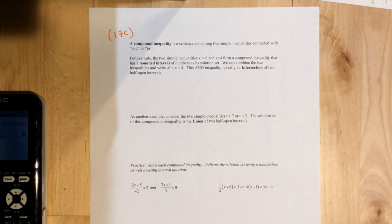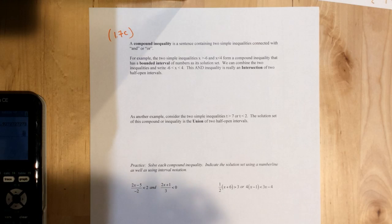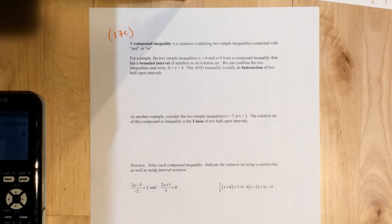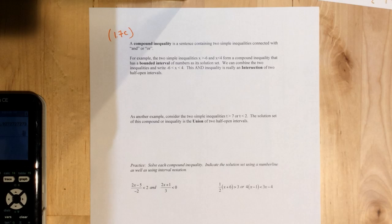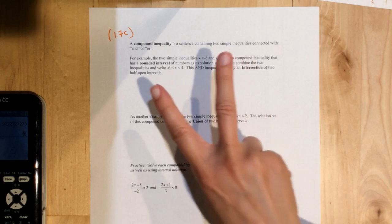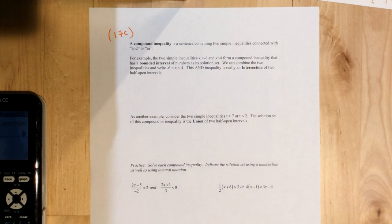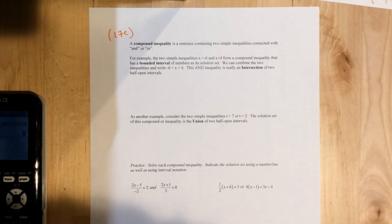Just like in English, compound sentences are connected by the fanboys: for, and, nor, but, or, yet, so. Those create compound sentences. In math, we only have and or or. So a compound inequality is the same thing in English, two simple inequalities connected with and or or.